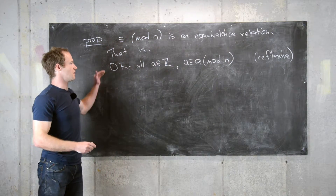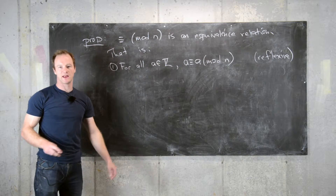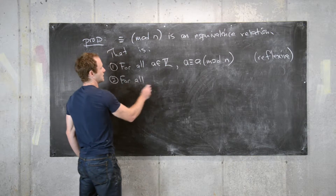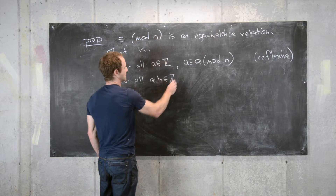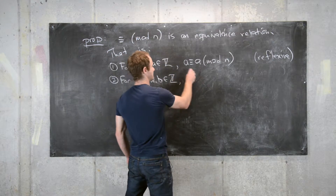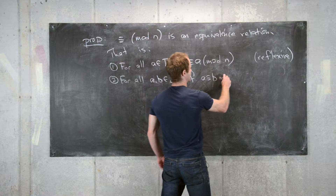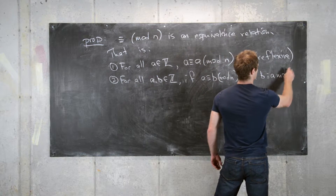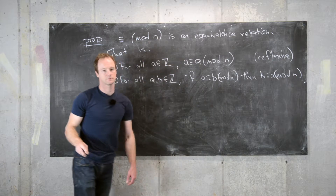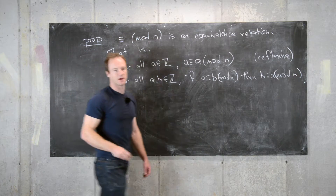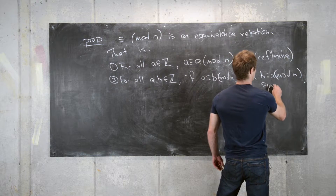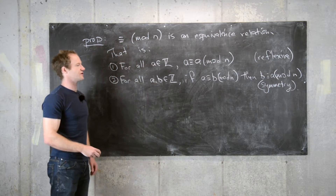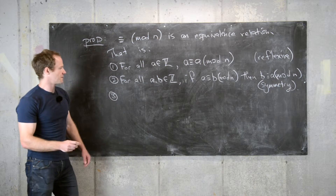The second condition is symmetry: for all integers a and b, if a is congruent to b mod n, then b is congruent to a mod n. This means the relation of congruence modulo n is symmetric.